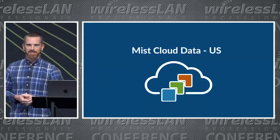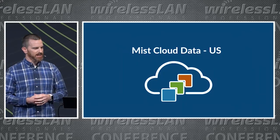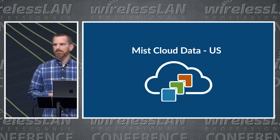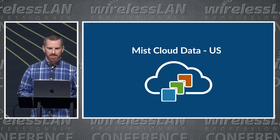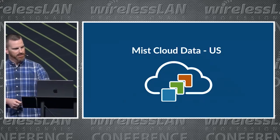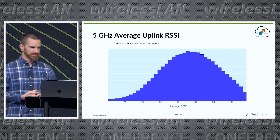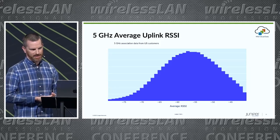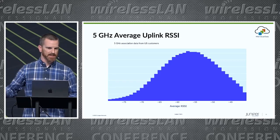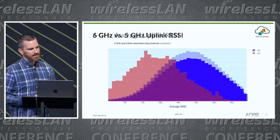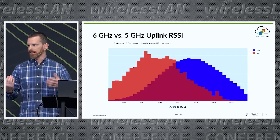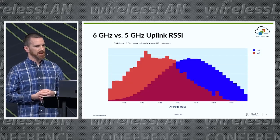I went talking to the MIST team and we did some work to look across our U.S. customer base at the 6 GHz performance data, to see if this is bigger than just me and my iPhone. If we look at uplink RSSI in the 5 GHz band, this tells us what we've been doing pretty much works — average around minus 55 dBm with a normal distribution. But if we add the 6 GHz data from real networks in the U.S., the uplink RSSI is a lot lower on average, about 10 dBm lower.